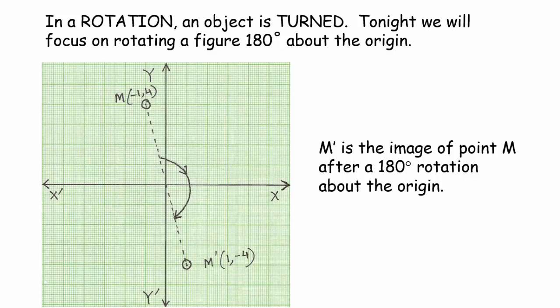In a rotation, an object is turned, and that's what we've been discussing the last couple of nights and in class. Tonight, we're going to be focusing on rotating a figure 180 degrees about the origin. This is a little bit different. If we look at this coordinate grid and we're looking at point M and point M prime, notice that it almost looks like they're directly opposite each other, which is what you're going to get out of a 180 degree rotation. It's going to be almost completely on the other side of where it started. Notice that it says it's 180 degrees about the origin.